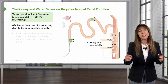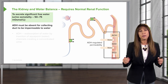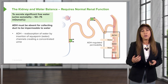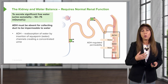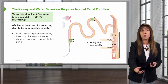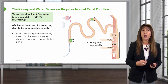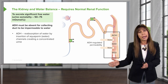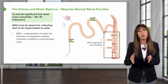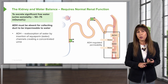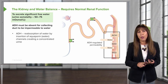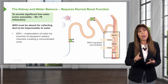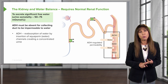ADH also has to be absent at the collecting duct, meaning that it has to be impermeable to water. If ADH is present, it's going to cause reabsorption of water by insertion of aquaporin channels into that collecting duct. So in order to make a dilute urine, we have to have solute delivery, we have to have those diluting segments open, and we have to make sure that ADH is suppressed.